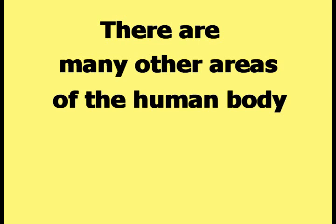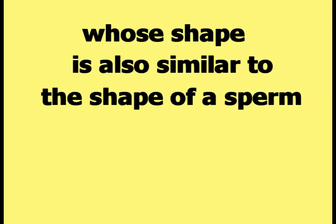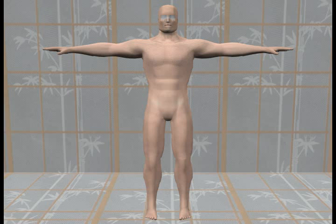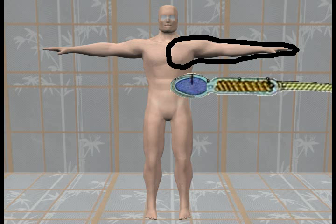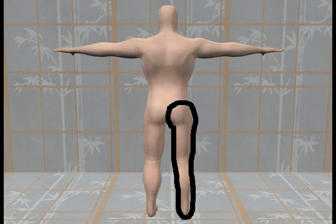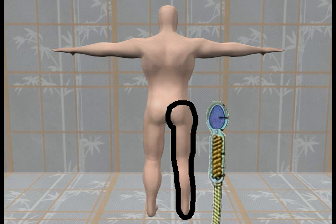There are many other areas of the human body whose shape is also similar to the shape of a sperm. With arms wide and legs slightly spread, if an outline is drawn around one arm and the same side of the chest, the shape looks similar to a sperm. Similarly, an outline around one leg and the same side buttock also creates a sperm-like shape.